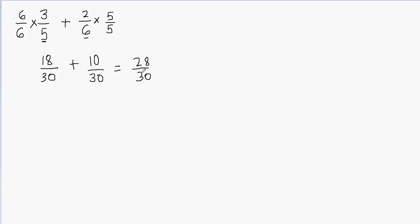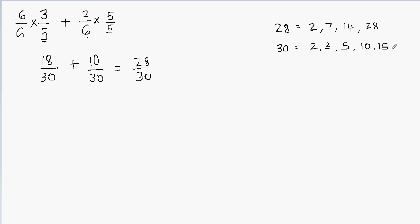You can see that I can still reduce this fraction to simplest form. To do that, I'll think about the greatest common factor. Let's write down the factors of 28: they are 2, 7, 14, and 28. And the factors of 30 are 2, 3, 5, 10, 15, and 30. We don't have to go far because the greatest common factor is 2. So I can divide this fraction by 2, dividing both the numerator and the denominator by 2.